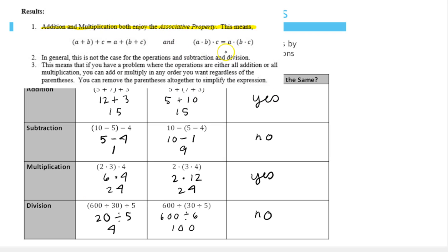Multiplication also has this property. We can multiply the 2 and the 3 first or the 3 and the 4 first. It didn't matter. When we multiplied them all, in the end, we got the same result.